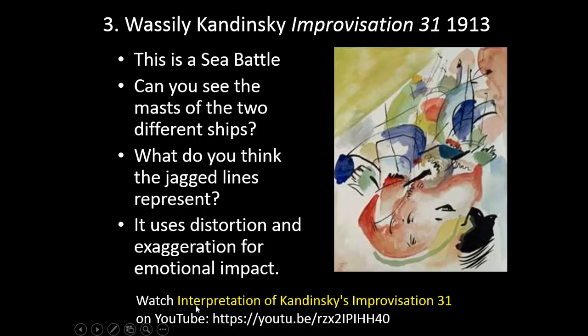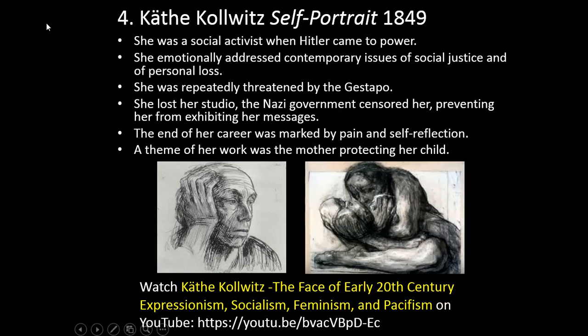Number four — Käthe Kollwitz, Self-Portrait, 1849. She was a social activist when Hitler came to power. She emotionally addressed contemporary issues of social justice and personal loss. She was repeatedly threatened by the Gestapo, lost her studio, and the Nazi government censored her, preventing her from exhibiting her work. The end of her career was marked by pain and self-reflection. A recurring theme of her work was the mother protecting her child. You can watch Käthe Kollwitz: The Face of Early 20th Century Expressionism, Socialism, Feminism, and Pacifism on YouTube.